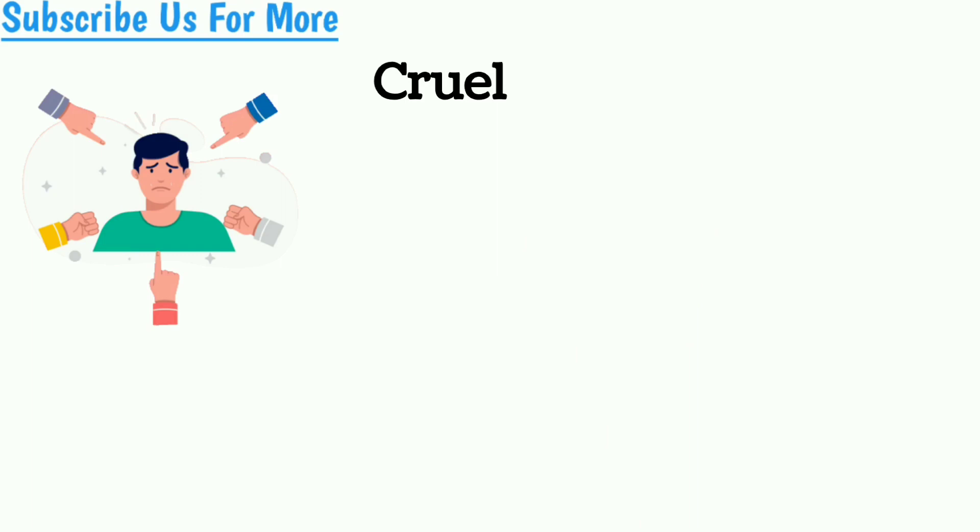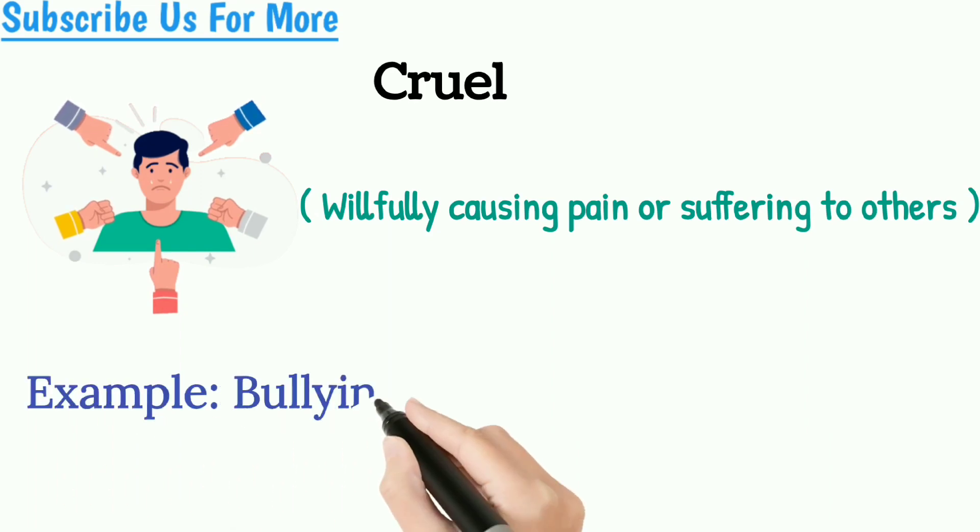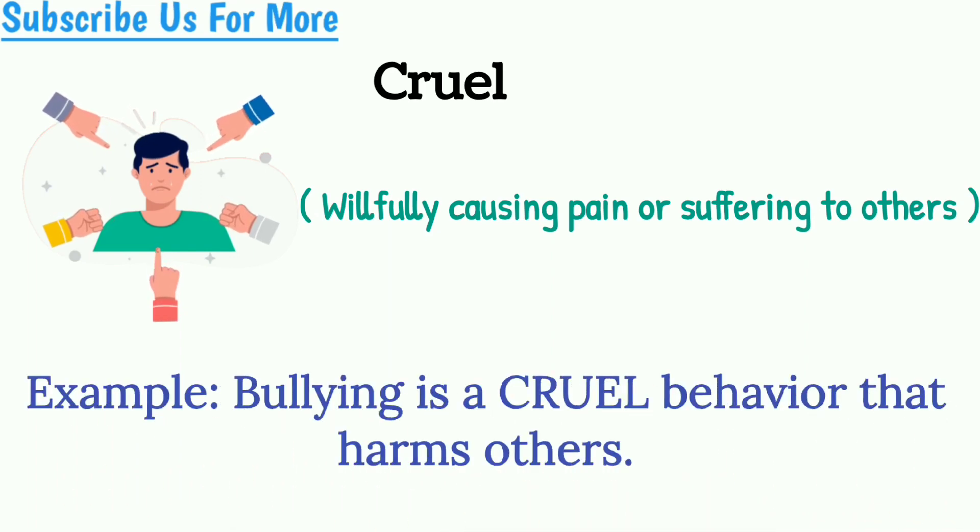Cruel meaning: willfully causing pain or suffering to others. Example: bullying is a cruel behavior that harms others.